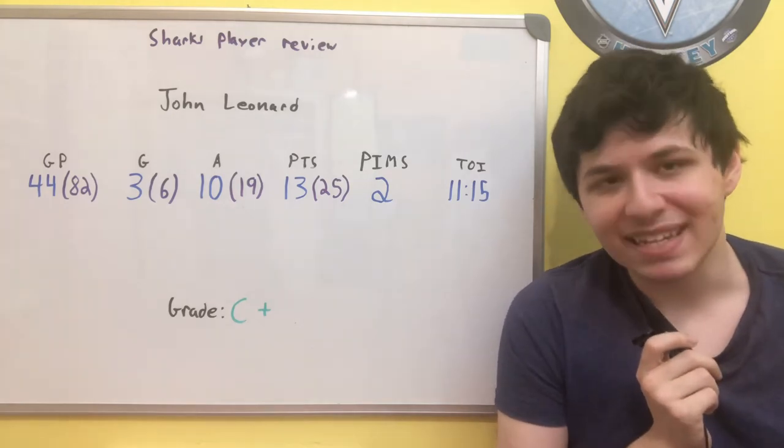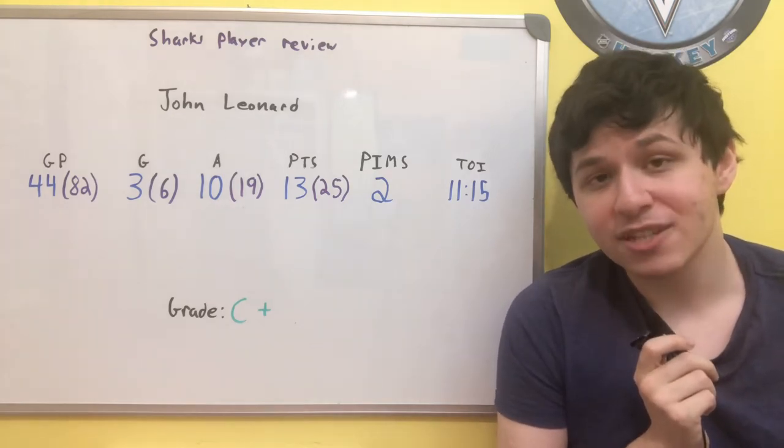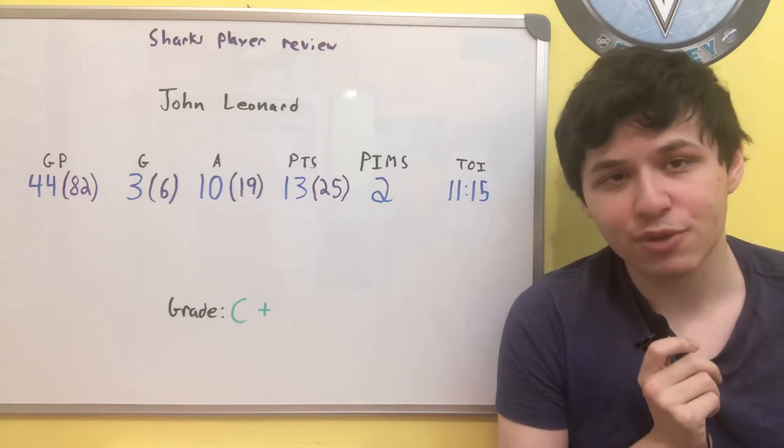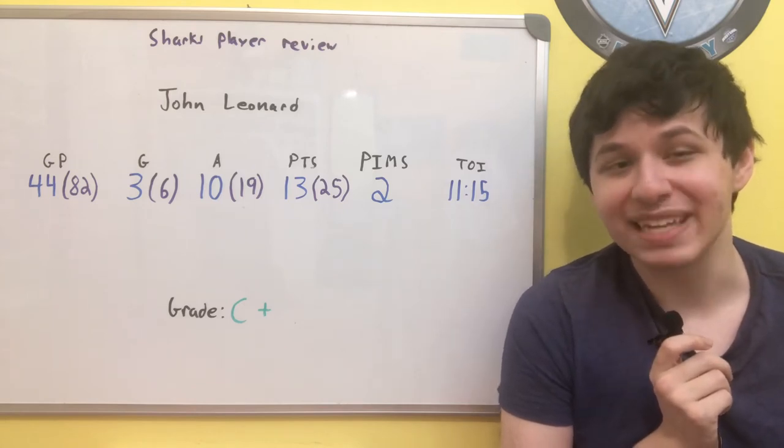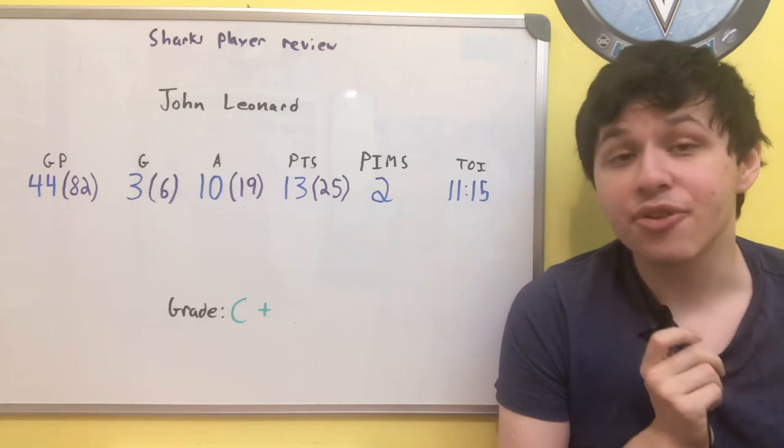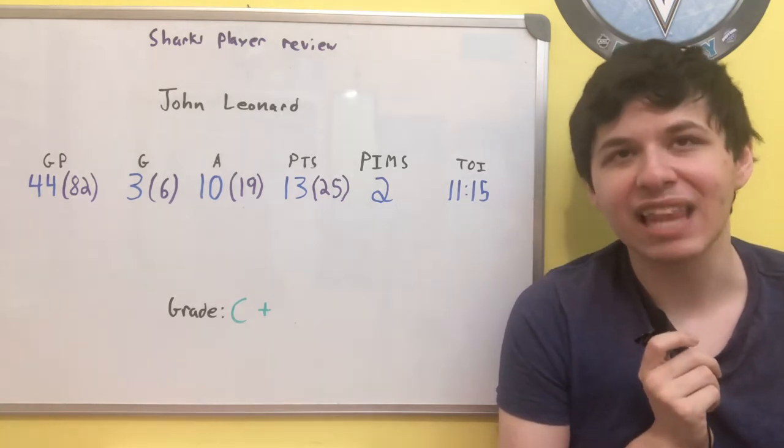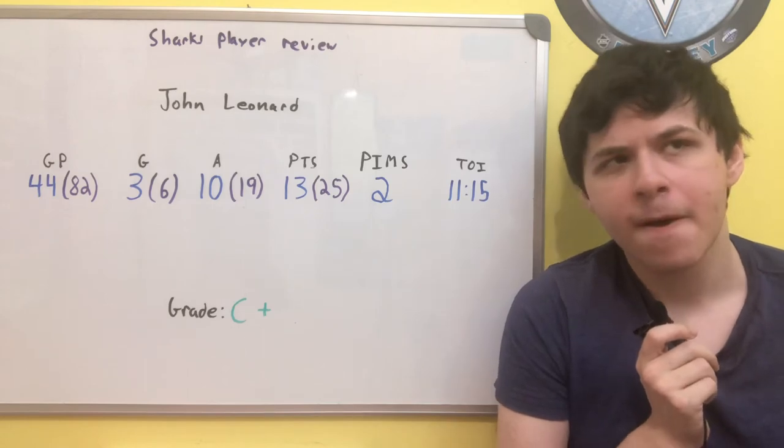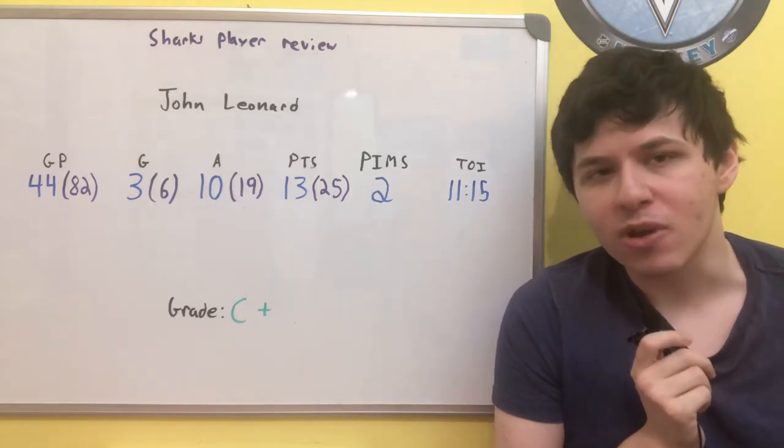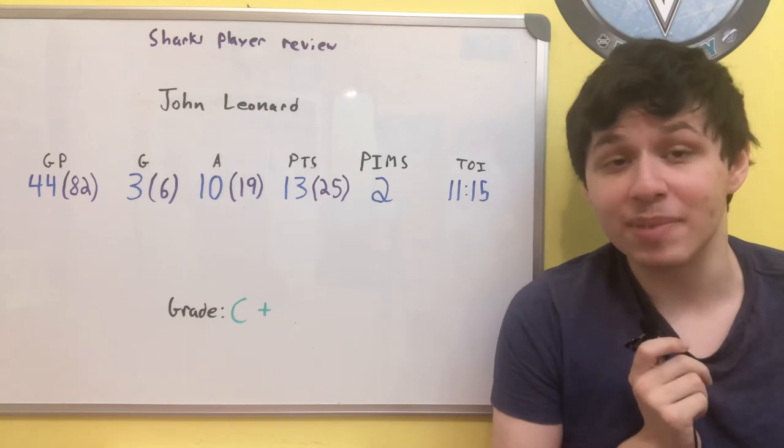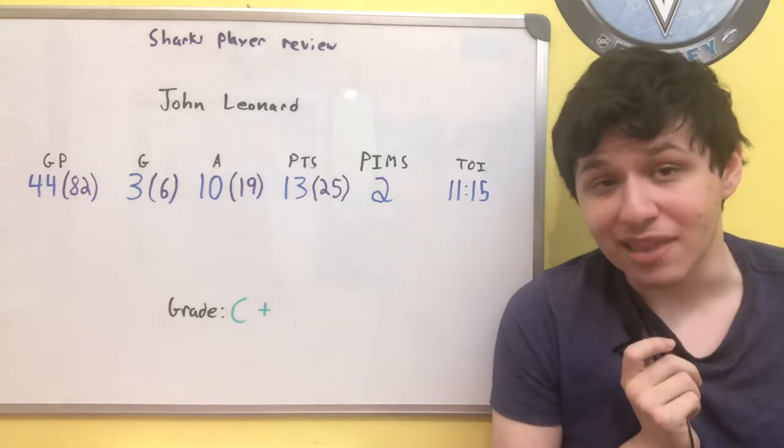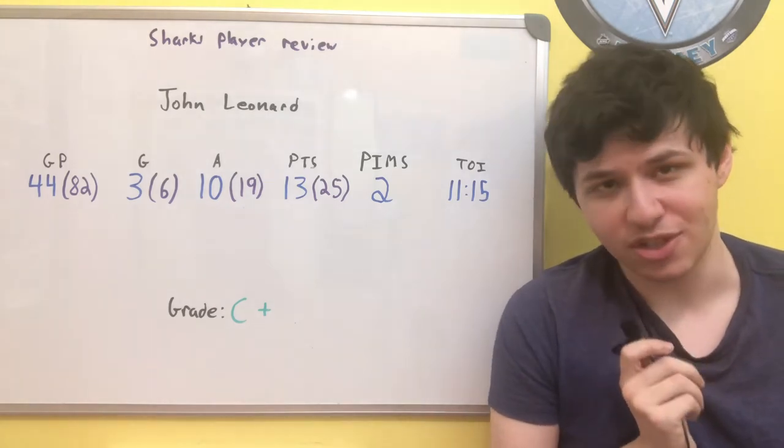We will be rating his stats over a full 82-game season. So goals, three goals on the year, which would be six over a full season. 10 assists, which would be 19 over a full season. And 13 points, which would be 25 over a full season, which is about in line with what you would expect from, I would say, a pretty good fourth-line player, which based on the ice time, which I will get to a bit later, that's exactly where John Leonard was kind of used in those situations.